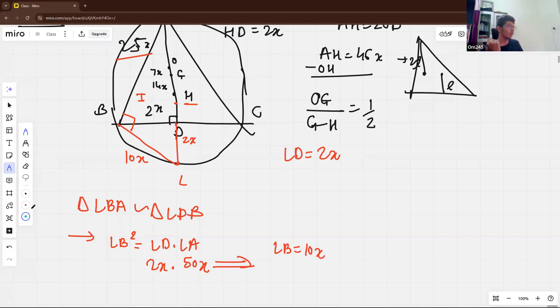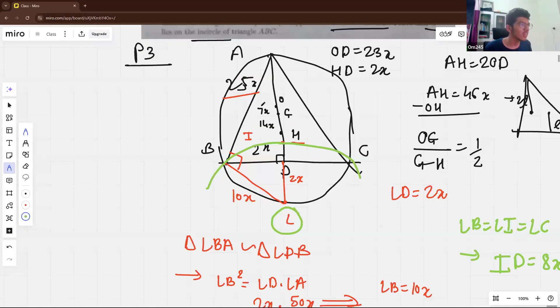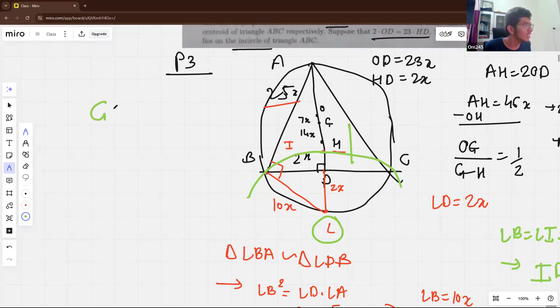Another key point we use is that, because L is the center of this circle or because of incenter lemma, we have LB equal to LI equal to LC, which actually give us LD equal to 8X. And you can just see here, if you calculate GD, this will be comes out to be 14X plus 2X, which is actually GH plus HD. And this comes out to be 16X.